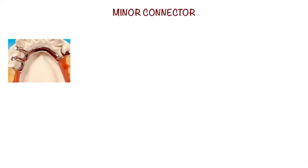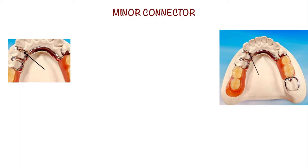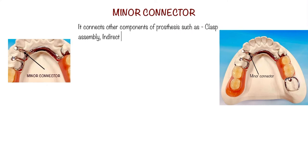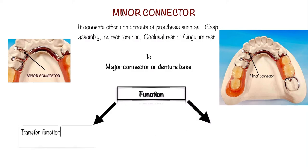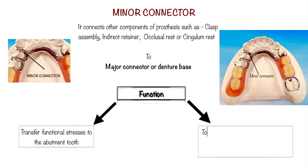Next comes the minor connector. The minor connector serves as a link between the major connector or base of the removable partial denture and other components such as the clasp assembly, indirect retainer, occlusal rest, or the cingulum rest. Its function is to transfer functional stresses to the abutment teeth, and it also helps in transferring the effect of retainers, rests, and stabilizing components throughout the prosthesis.